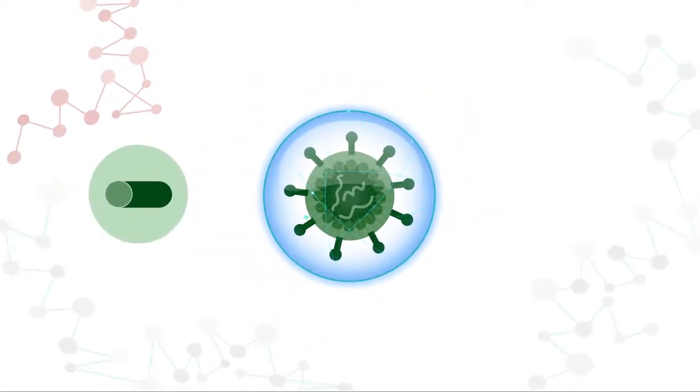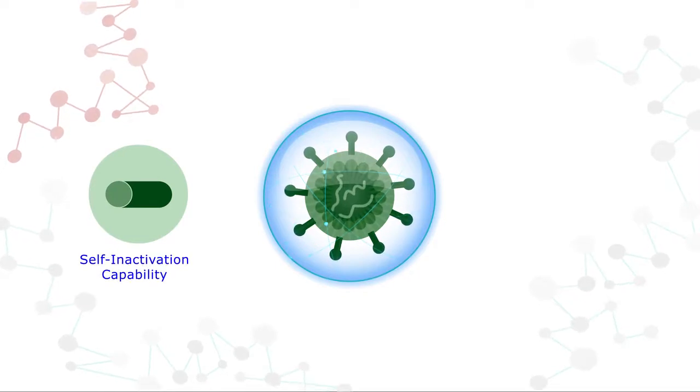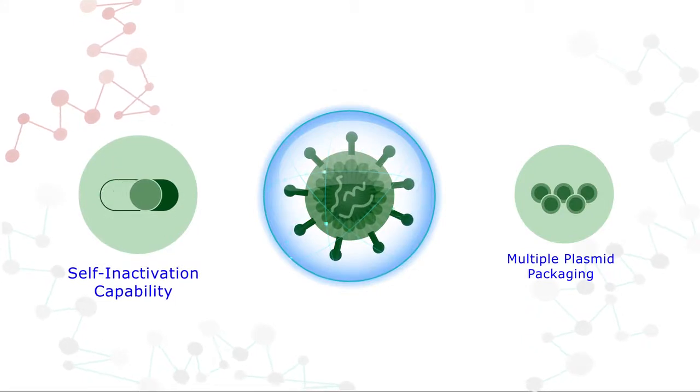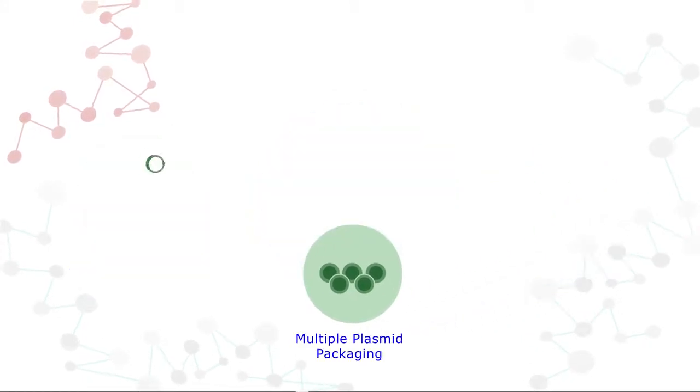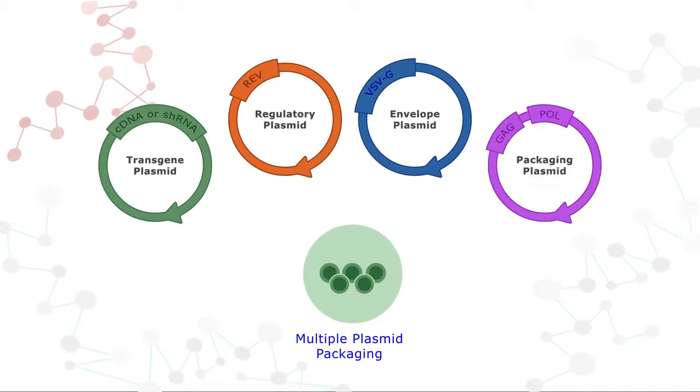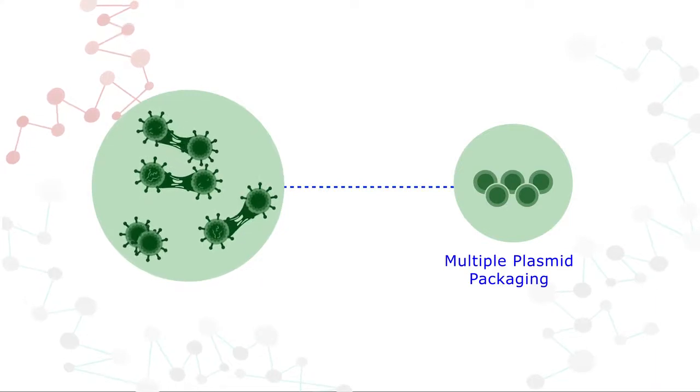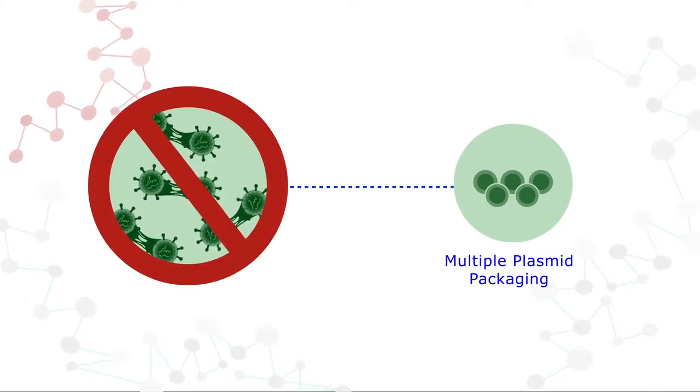Biosafety features like the self-inactivation capability and multiple plasmid packaging further ensure that the quality of the virus titers remain intact. The self-inactivation feature and multiple plasmid packaging, namely into four plasmids, ensure that the lentivirus does not replicate in cells and a homologous recombination event does not occur.